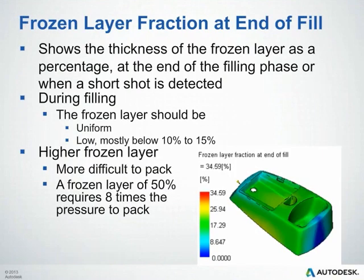The Frozen Layer Fraction at End of Fill shows the thickness of the frozen layer as a percentage at the end of the filling phase. During filling, the frozen layer should typically be uniform and low — mostly below 10–15%. If you're seeing a higher frozen layer fraction above 10–15%, it could be very difficult to pack this part. As a general guideline, a frozen layer of 50% could require up to 8 times the pressure to pack out the part.